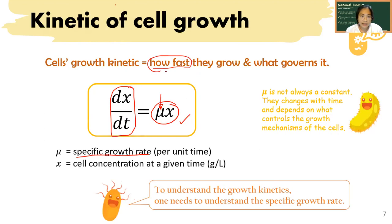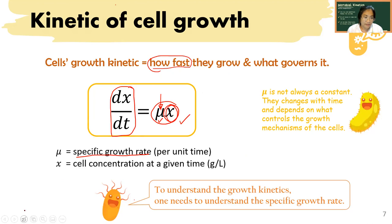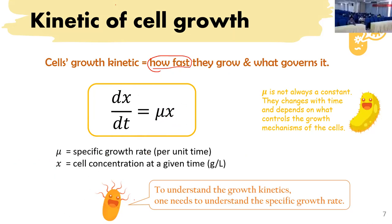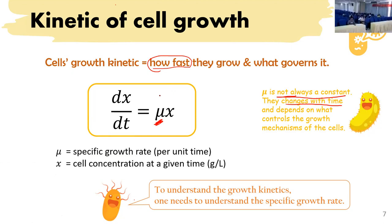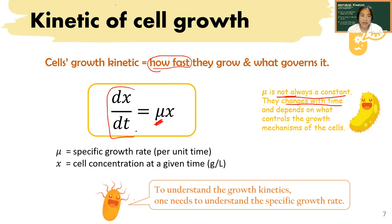Looking at this equation, you see that the change depends on what μ is and how much the cells are as well. μ is not always a constant — this value changes with time and depends on what controls the growth and the mechanism of the cells. To understand how the term changes, we have to understand how μ behaves.